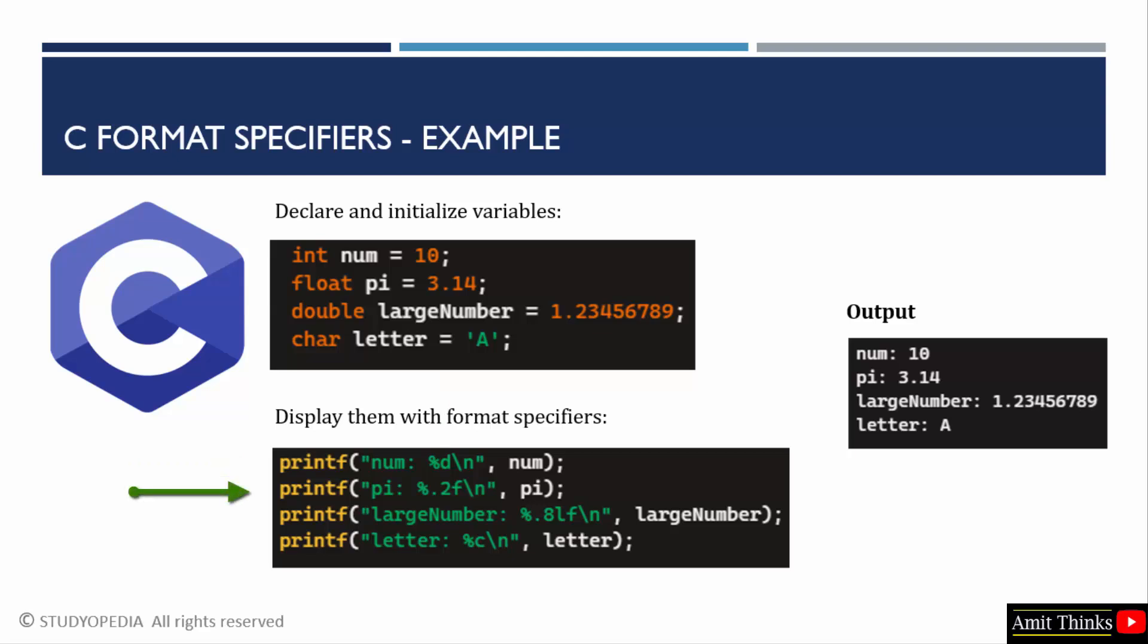For float, we have used %f, but that is for the pi, 3.14. But you can see %.2 here. .2 is for precision. So, after the decimal, it is allowing only two digits. That's why the output will be 3.14 in this case.